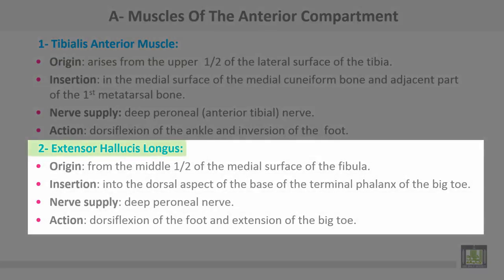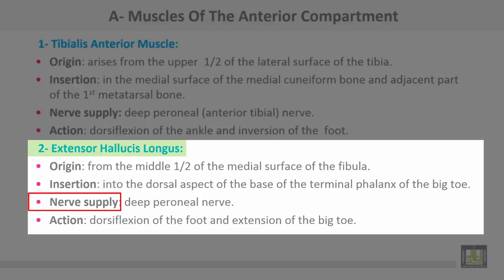Number two: extensor hallucis longus. Origin from the middle two-fourths of the medial surface of the fibula. Insertion into the dorsal aspect of the base of the terminal phalanx of the big toe. Nerve supply from the deep peroneal nerve. Action: dorsiflexion of the foot and extension of the big toe.